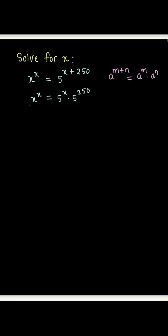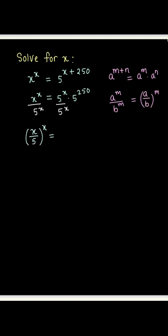The reason we did this is so we can divide both sides of the equation by 5 to the power x in the next step, so we can bring all the terms containing x on one side of the equation, which is the left-hand side in this problem. So now we have x over 5 to the power x equals 5 to the power 250.